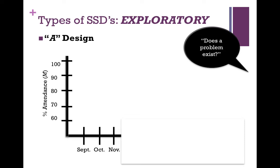I wouldn't just look at September's average monthly attendance because that doesn't tell me about any trends — it may be a bad or good month. If I take two months, September and October, and both are low, I might call it a coincidence. But three data points indicate a trend, and that's usually the minimum number needed to establish one. With the A design there is no intervention — A just designates baseline — and we're simply looking at whether there's a problem with attendance.